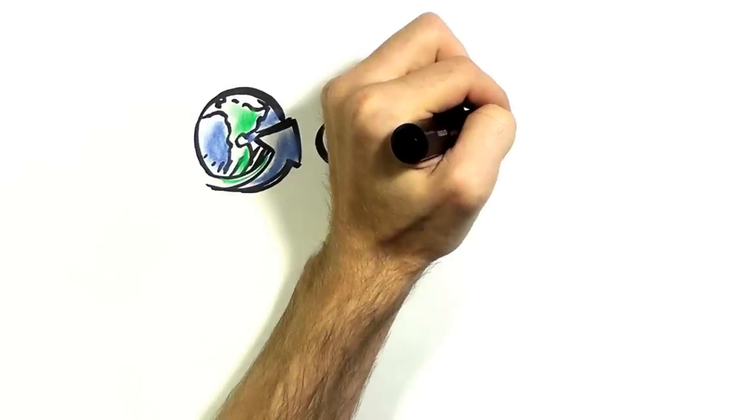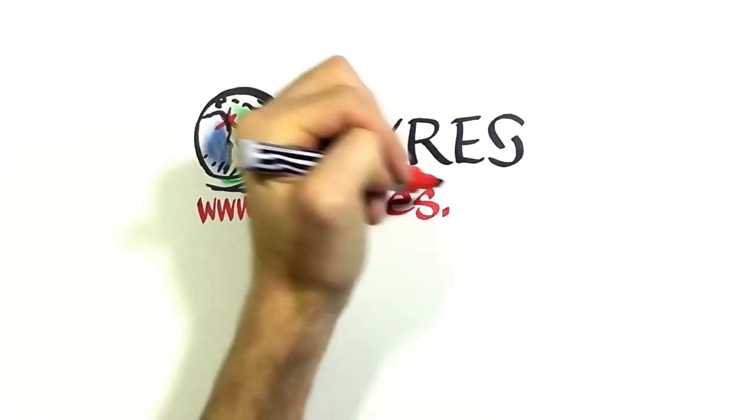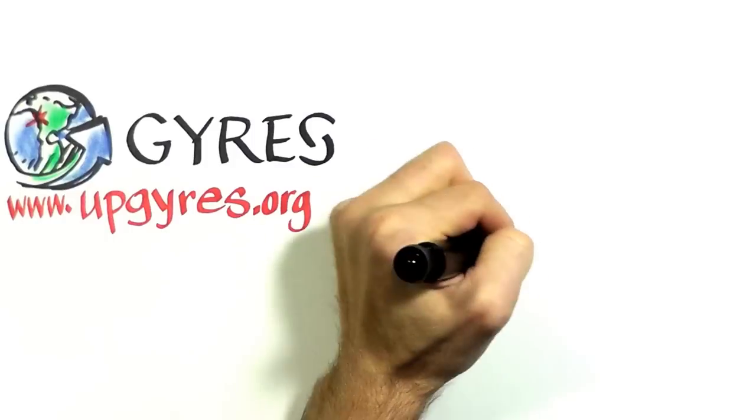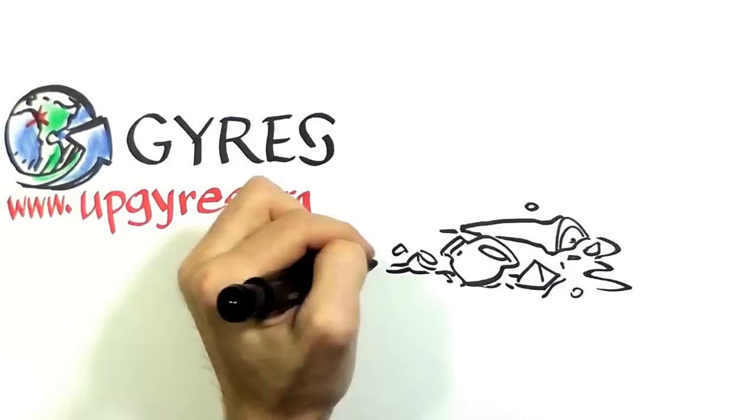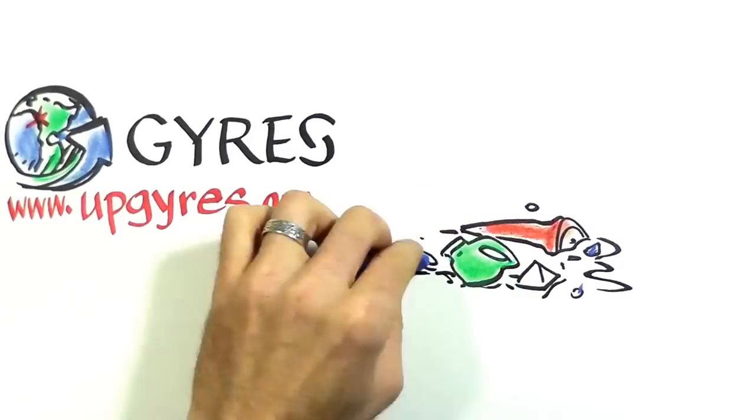We are Upcycle the Gyre Society, a non-profit environmental organization registered in June 2012 in the province of British Columbia, Canada. We at UGS are focused on promoting and implementing the idea of upcycling marine plastic pollution.